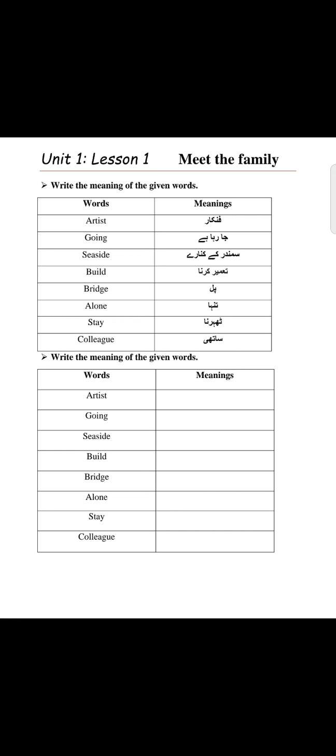First, you have to read this story from your book page number two. Question number one is: write the meaning of the given words. 'Artist' means 'fankar,' 'going' means 'ja raha hai,' and so on. You have to write these word meanings on your spring pack.